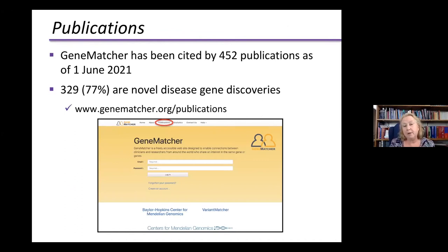GeneMatcher has been cited by 452 publications as of June 1st, of which 329 — or 77% — were actually novel disease gene discoveries. So it's really made a contribution to the growth of that first graph I showed you. You can follow this yourself by going to genematcher.org and selecting the publications tab.